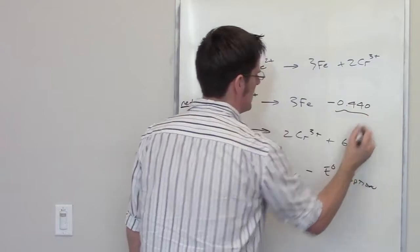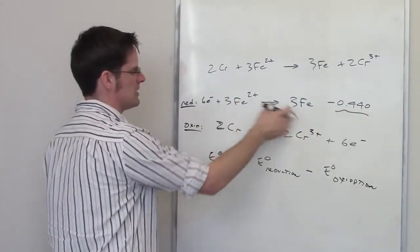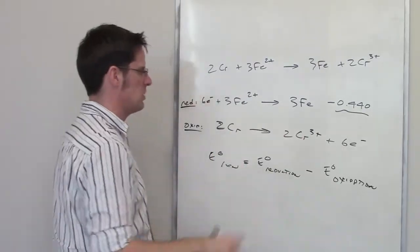Now, one thing that's interesting about these is the stoichiometry doesn't matter. It's still negative 0.44 if I have 3s in front of these, if I have 1s in front of these, if I have zillions in front of these. Totally the same.